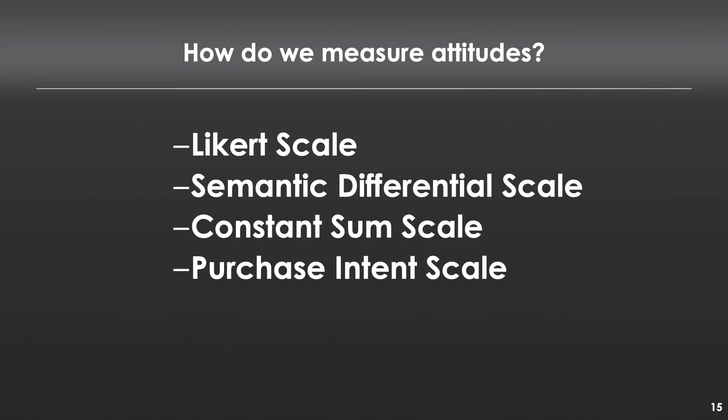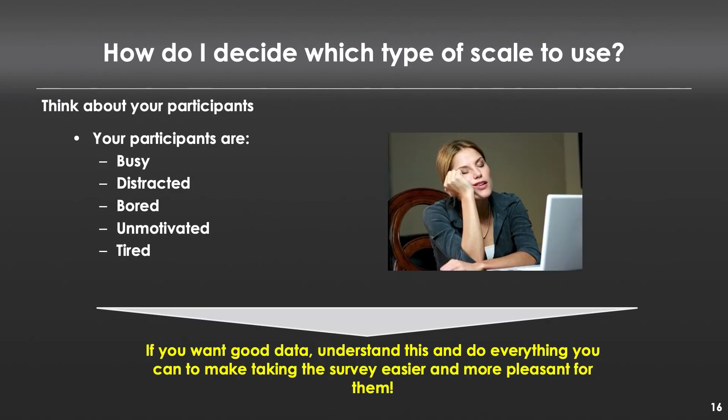There are quite a few different ways to measure people's attitudes, but four that are very common are Likert scales, semantic differential scales, constant sum scales, and purchase intention scales. But before I do that, I need to make it very clear that when you're designing a survey, the way you should be thinking about this is that no one — not a single person other than you — cares about your stupid survey.